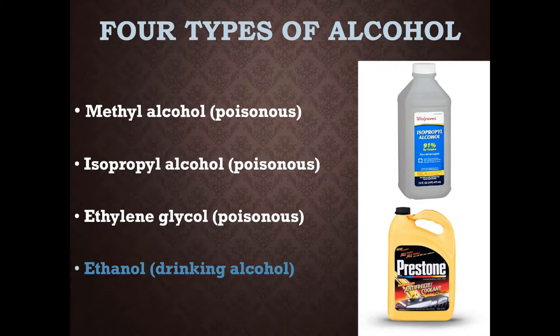The second type is isopropyl alcohol — more commonly known as rubbing alcohol — which is also poisonous. It has a very strong odor and is used in household cleaners, industrial solvents, and as a gasoline additive. Isopropyl alcohol can be oxidized and turned into acetone. The third category is ethylene glycol, which is also very poisonous. It is used as an additive for antifreeze and is a main ingredient in polyester fabric. It is the only alcohol with no odor at all, and when consumed it reportedly tastes a little sweet.